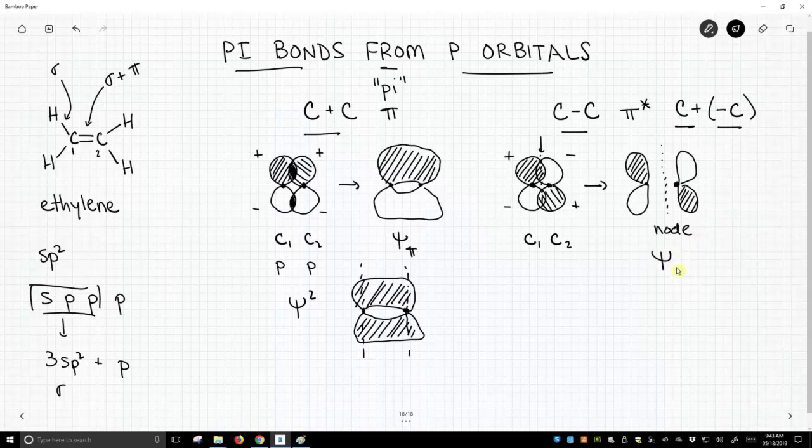So this is the wave function for our pi star. And if we can imagine squaring that function to get the psi squared, the probability function, we couldn't put electron density in the middle because there's nowhere for it to go. So that's an antibonding orbital. So this is how we construct pi bonds. So there are sigma bonds and we will see pi bonds. They come from multiple bonds between two atoms.